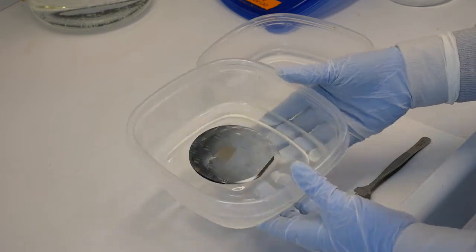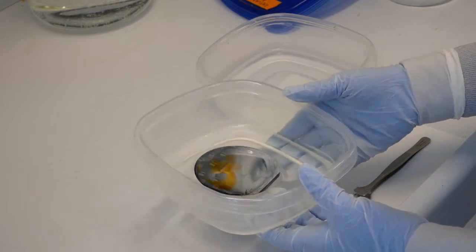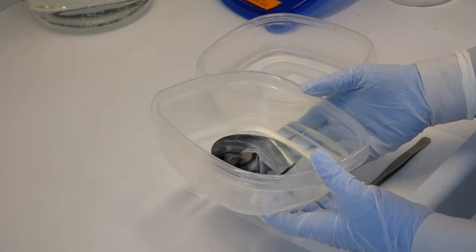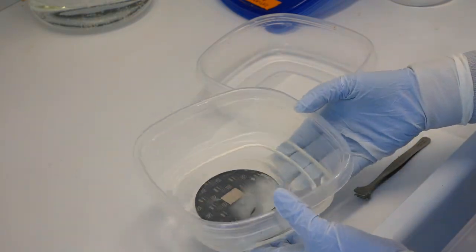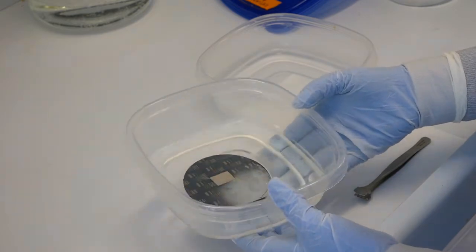The advantage of wet etching is that it is simple to do and relatively low cost. There also tends to be good selectivity between the material you want to etch, like the glass, and the material you don't want to etch, like the photoresist.